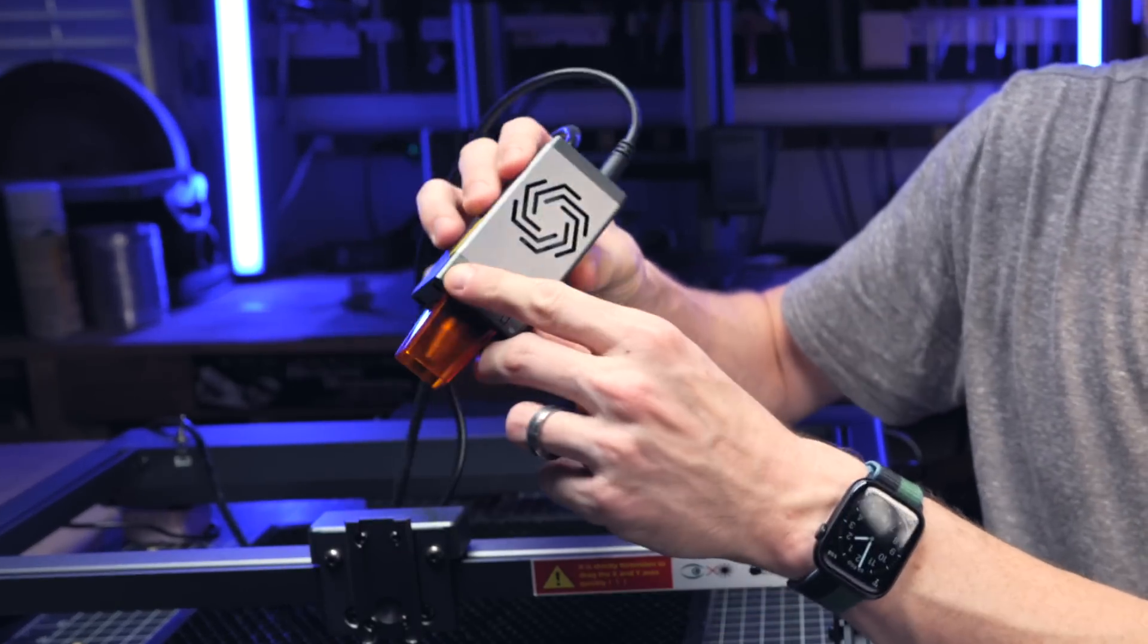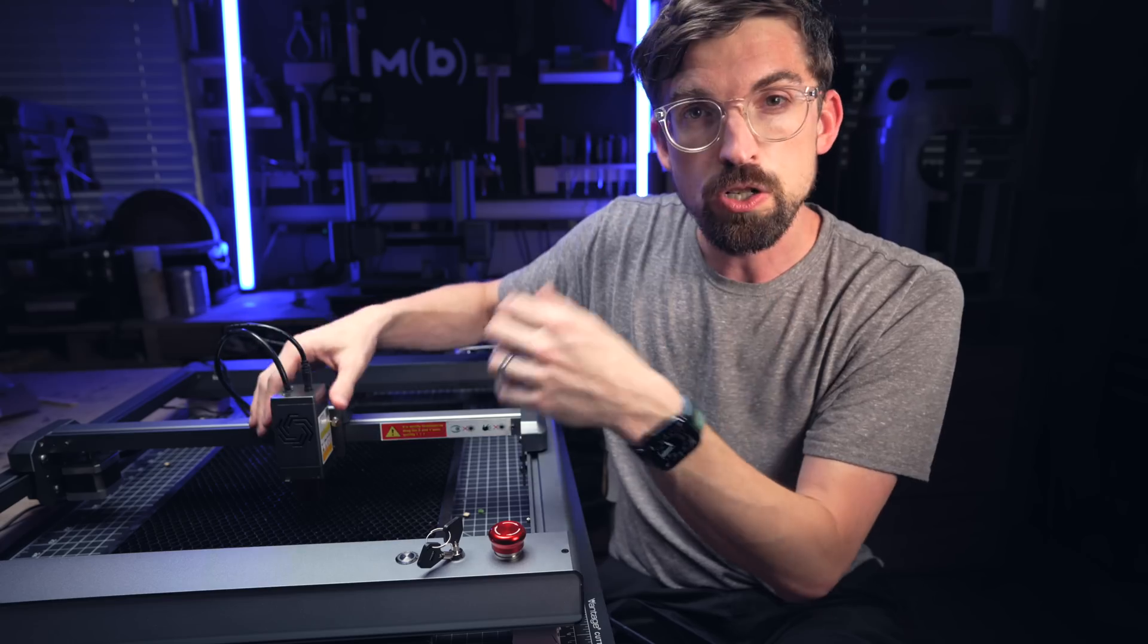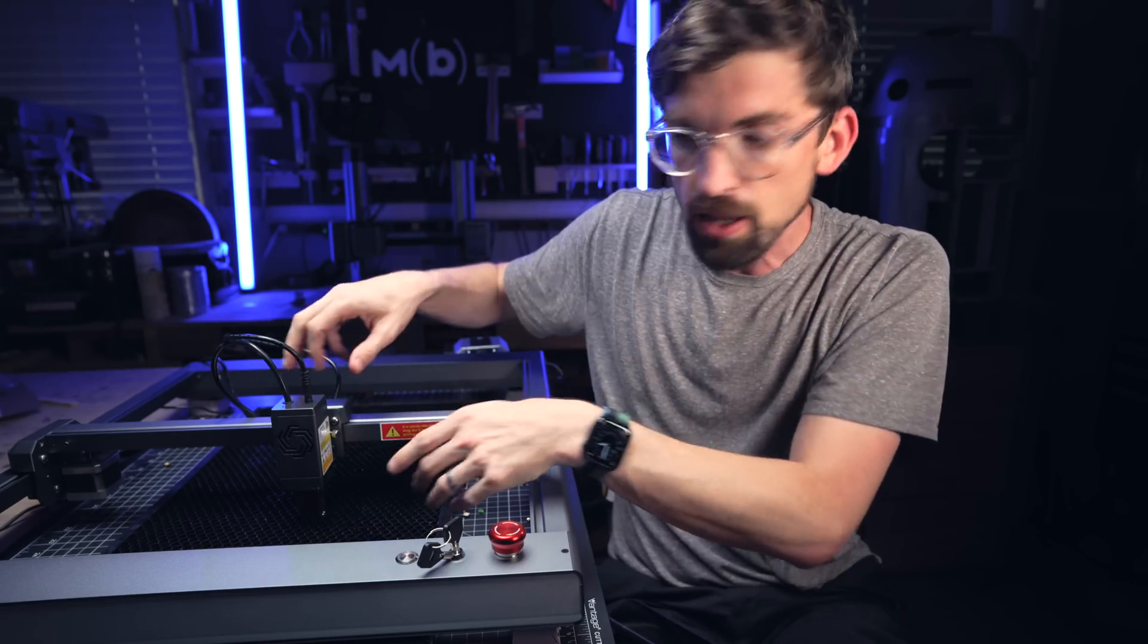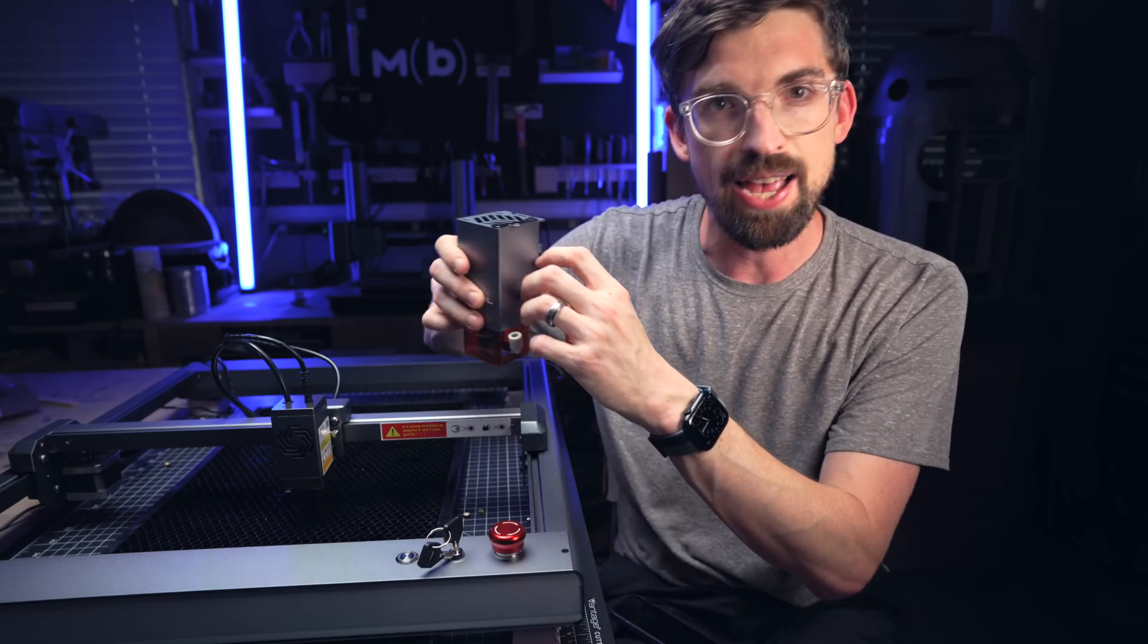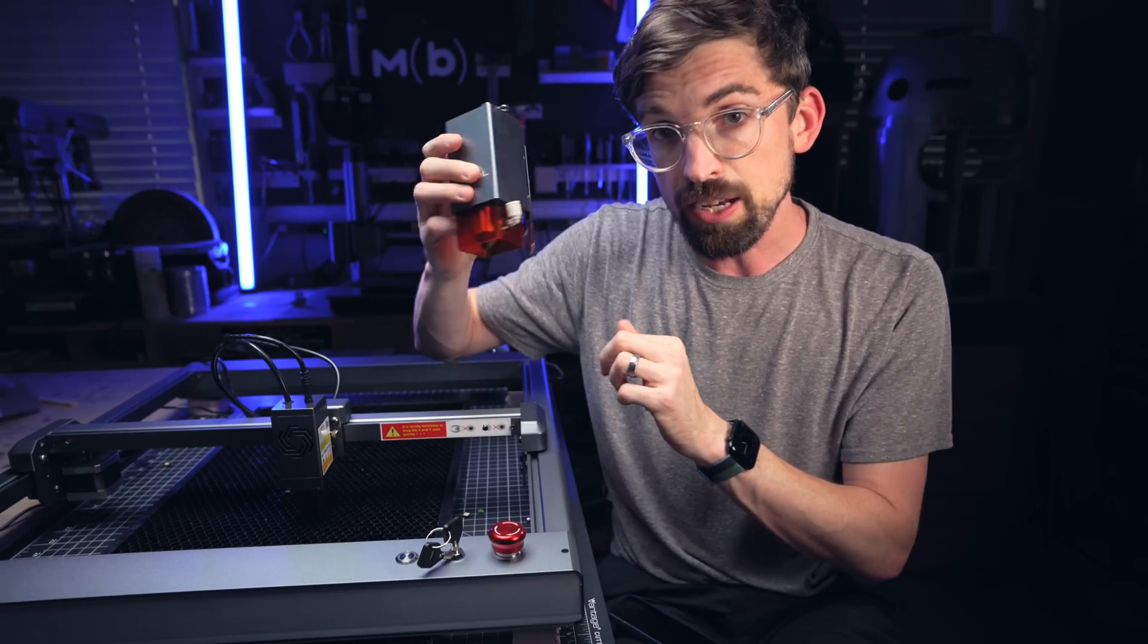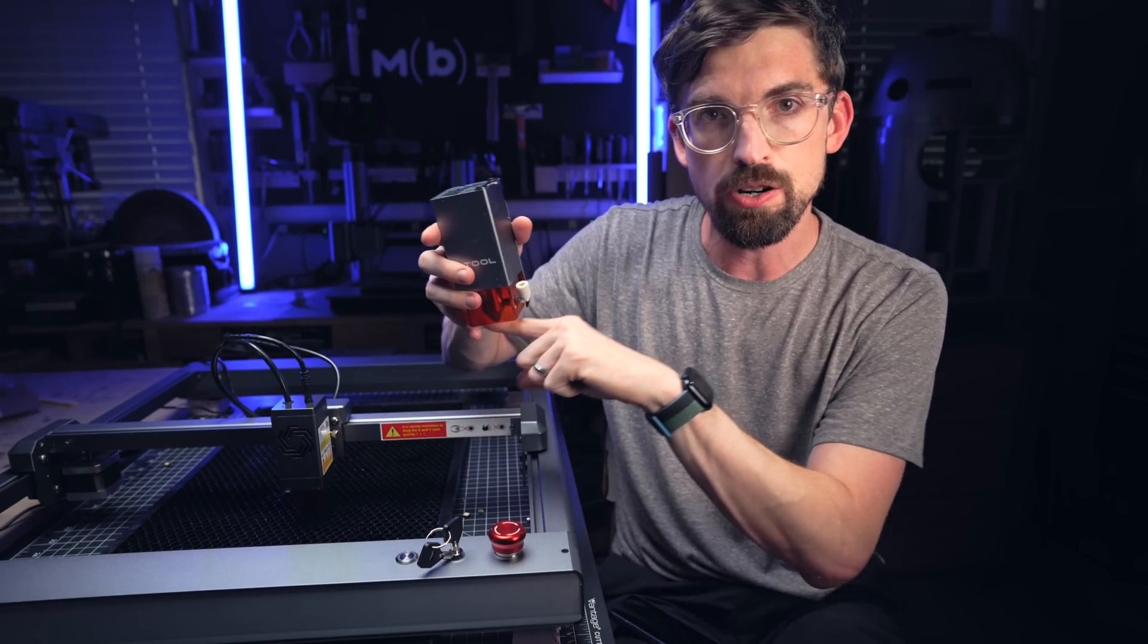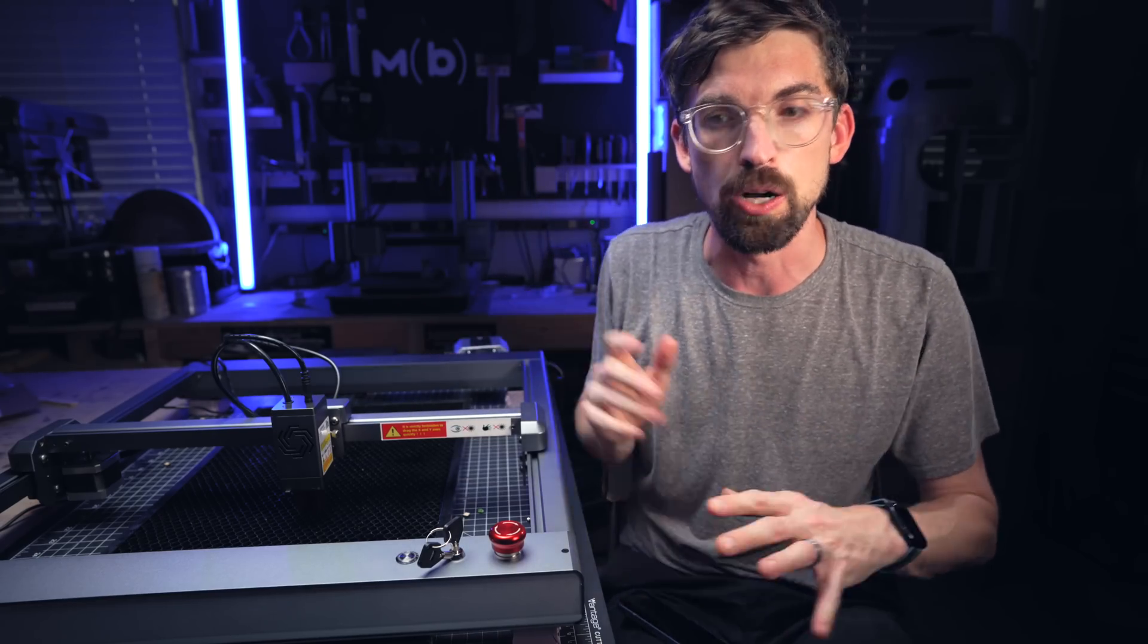Another nice feature on the laser module is they have this little guy right here, and this is how you focus. So you just drop this over your material, drop this down, get it where it needs to go, lock it in, and then that just flips right back up. X-Tool also has a feature like that. It just comes from the side and flips down. That's always been one of my favorite things about the X-Tool unit, is just how easy they are to focus. You don't have to worry about little focus blocks that you put underneath that you have to keep track of. Everything is built in, and it's great that O-Tour is using that as well.